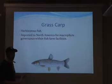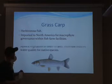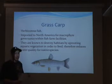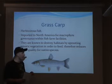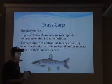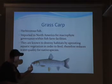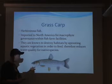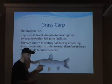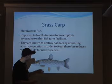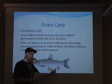The grass carp is a herbivorous fish which consumes phytoplankton and algal matter. It was imported to North America for macrophyte management within fish farm facilities. Grass carp are known to destroy habitats by uprooting aquatic vegetation, reducing water quality for native fish species. They are characterized by eyes in line with the mouth, a scaly appearance, and a distinctive spacing between the dorsal fin and rear fin.